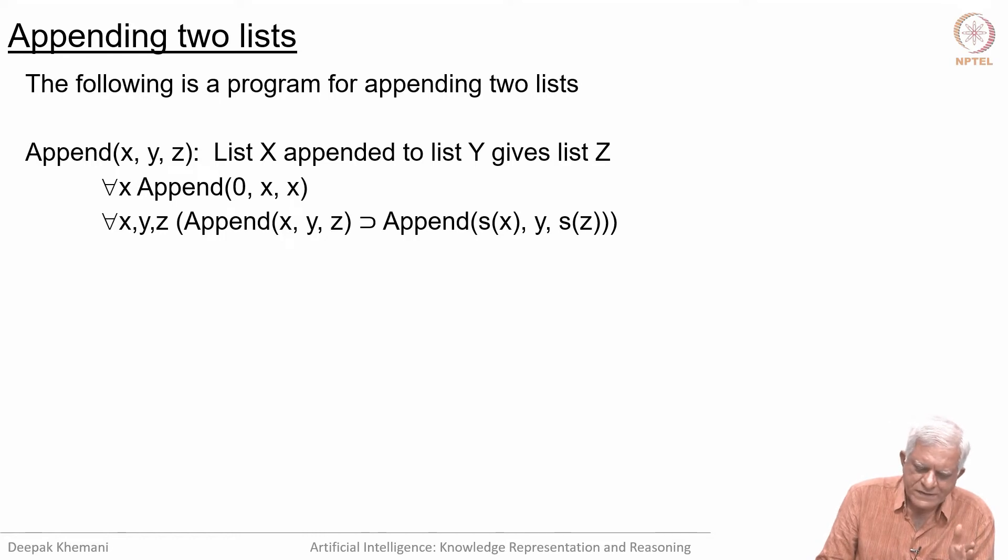The base clause says that if you append the empty list to anything, you will get the same list back. So, append nil x x.